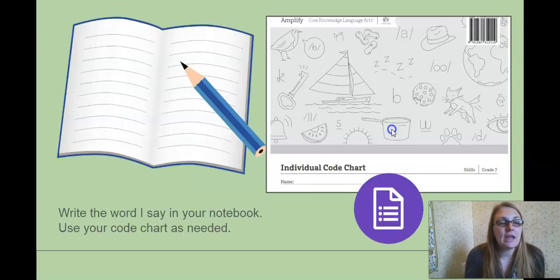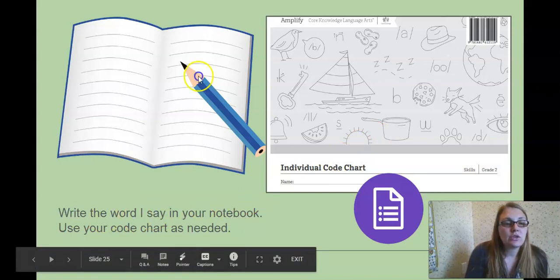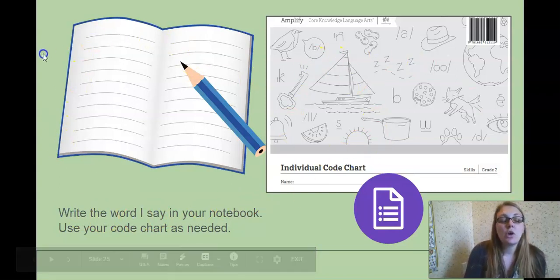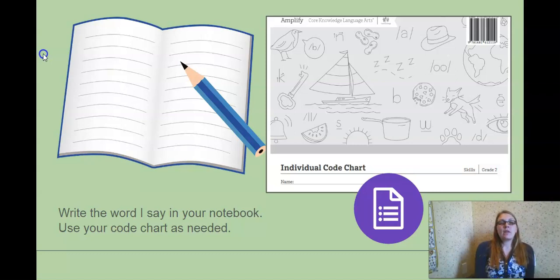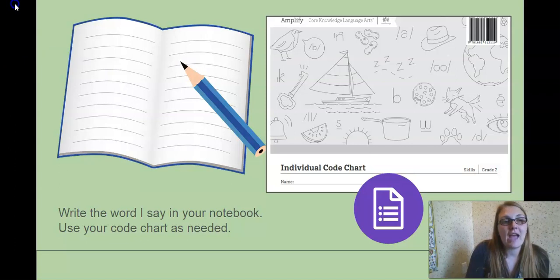Okay, now it will be our portion of the lesson where we do dictation. So again, you'll need your notebook or paper to write on, your individual code chart. You're going to listen to the word I say, I'll read it in a sentence, say it again, you'll write it down and we'll go over it. It will be a very similar setup. The other three words will be on the Google Form slide at the end.